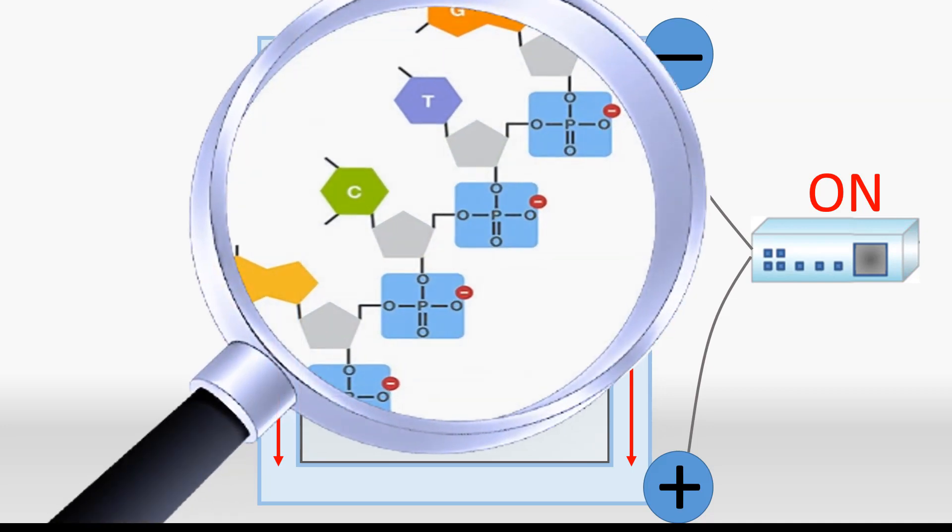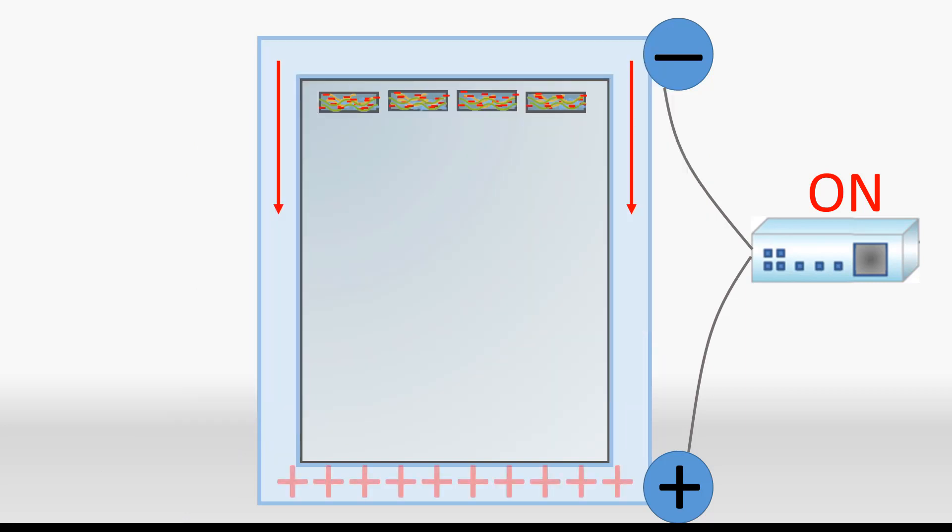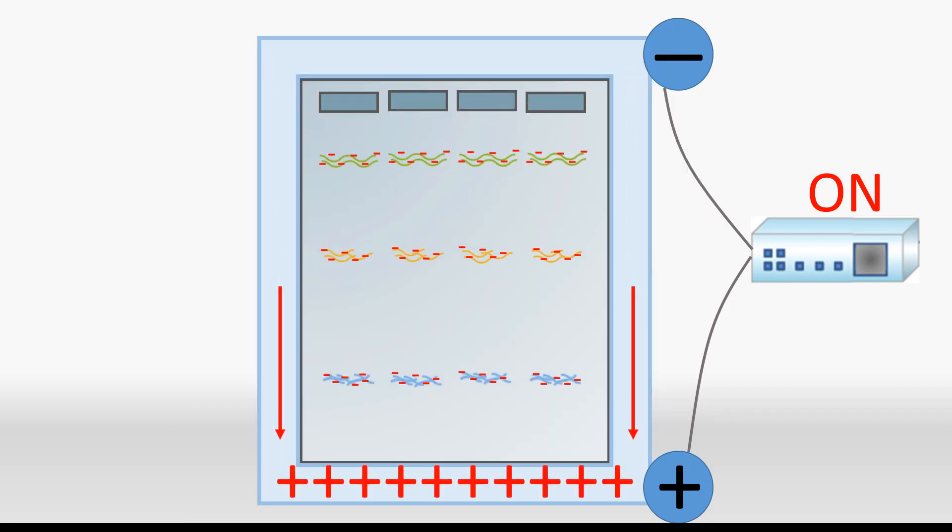Recall that DNA consists of a chain of nucleotides, which each contains a nitrogenous base, a 5-carbon sugar, and a negatively charged phosphate group. It is this phosphate backbone that imparts the DNA molecules with an overall negative charge. This is why DNA molecules migrate towards the positive electrode during electrophoresis.